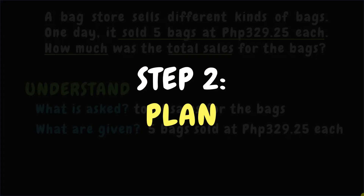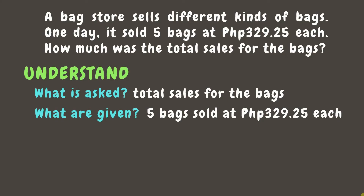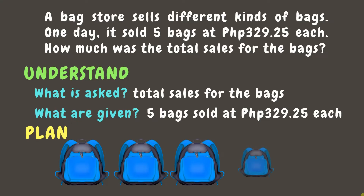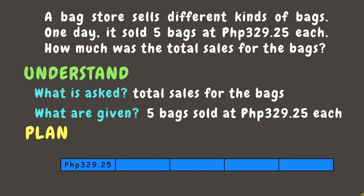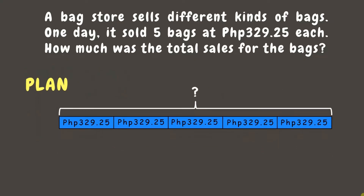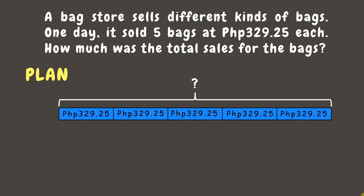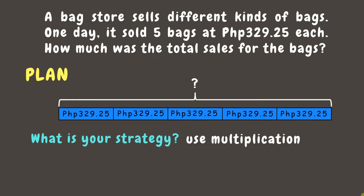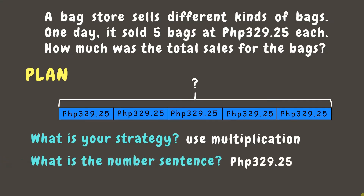Step 2: Plan. Think about how to solve it based on the given data. We know that there are five bags sold at 329 pesos and 25 centavos each, and we are figuring out the total sales. From this illustration, we can plan to add all the costs or simply multiply the number of bags by the cost of each bag, giving us the number sentence: 329.25 pesos × 5 = N, where N is the total sales.